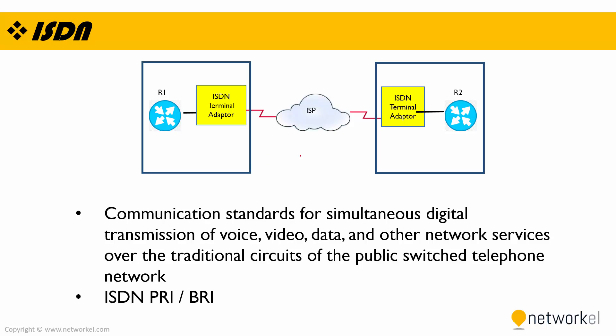Let's take a look at ISDN. ISDN is a communication standard for simultaneous digital transmission of voice, video, data, and other network services over the traditional circuits of the Public Switched Telephone Network. Over ISDN we can carry video and data too, but most of the time we use it to carry voice traffic. There are two types: ISDN PRI and ISDN BRI.